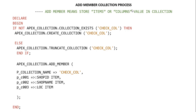We use the add member process for storing item values or report column values. If you use an interactive report with the help of a collection, add member helps in storing the value in the collection state. First, we write: begin if not apex_collection.collection_exists — meaning if the collection does not already exist, perform the create; else perform the existing collection process.